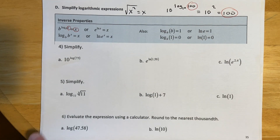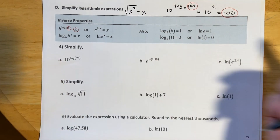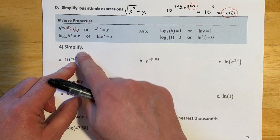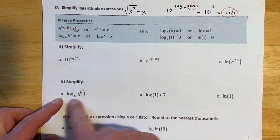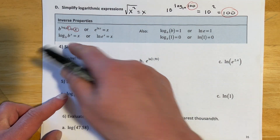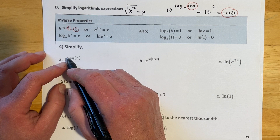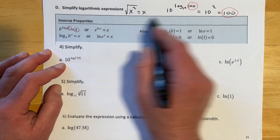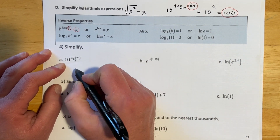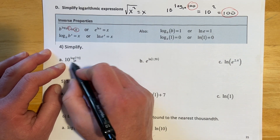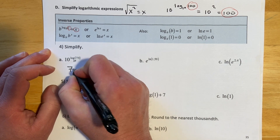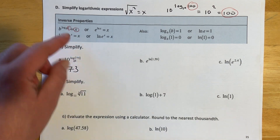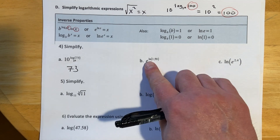If an expression looks terrible, it's probably one of these inverse properties. For example, 10 raised to log of 73 — the invisible base 10 — that whole mess just equals 73. You just have to recognize which property you're looking at.